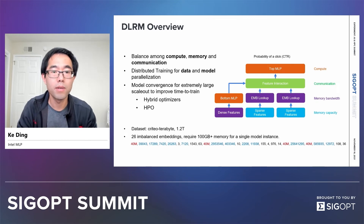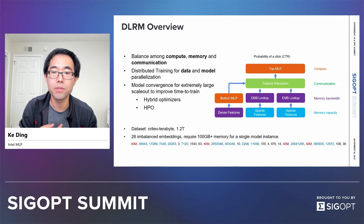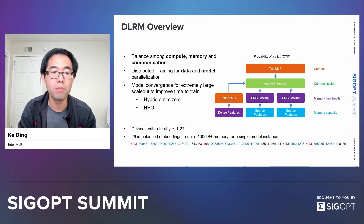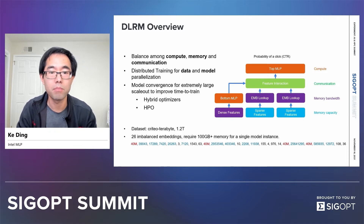DLM is a state-of-the-art model and part of the MLPerf training benchmark. At a high level, its model topology is quite simple. The dense feature goes to the bottom MLP, and the sparse feature goes to embedding lookup tables. After that, they interact together and feed into the top MLP, and then output as the click probability.